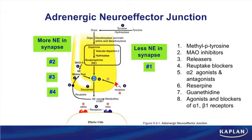A second mechanism, shown by number five, involves alpha-2 agonists and antagonists. If you use an alpha-2 agonist — drugs like clonidine or methyldopa — those drugs stimulate alpha-2 receptors, enhancing the negative feedback mechanism and causing inhibition of norepinephrine release. On the other hand, if you use an alpha-2 antagonist and block that negative feedback mechanism, the nerve will continue to release norepinephrine — so alpha-2 antagonists can actually increase norepinephrine in the synapse.